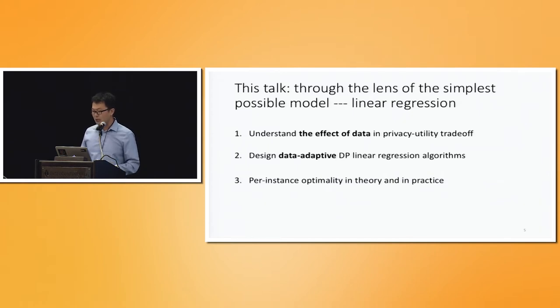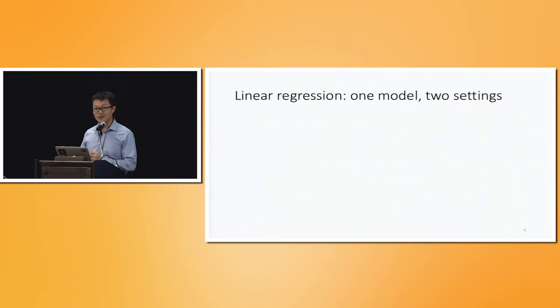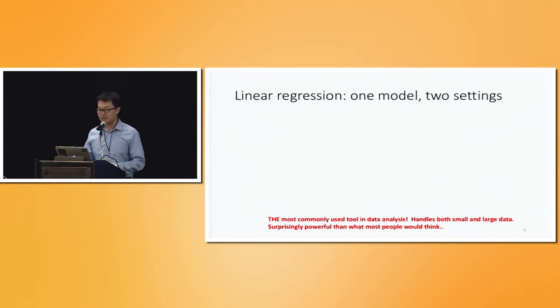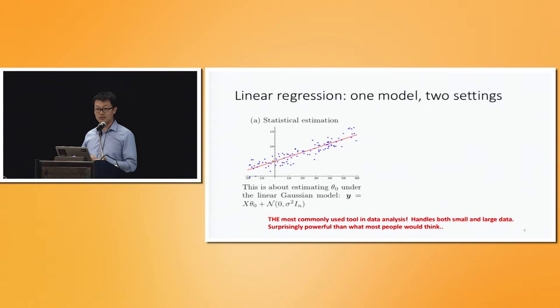OK. I'll start by talking about linear regression, the same old linear regression without privacy constraints. So even for this model, different people might have very different interpretations. It is by far, I still argue, still by far the most popular and most commonly used data analytical tool for understanding what's going on in the dataset. And it's often surprisingly more powerful than what people would expect. So now, let me put on my statistician's hat, and the task of a statistician is to infer an underlying parameter of a statistical model based on the data. So let's assume that data is generated by a linear Gaussian model, and the task of linear regression is to estimate this theta zero parameter as well as possible, or make hypothesis testing about this theta zero.